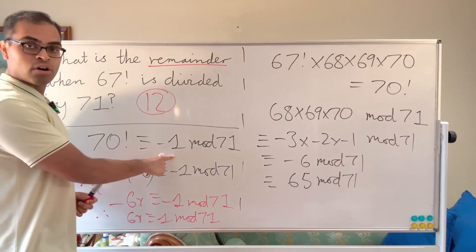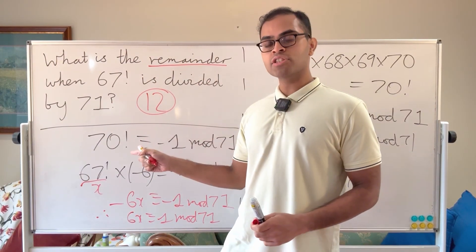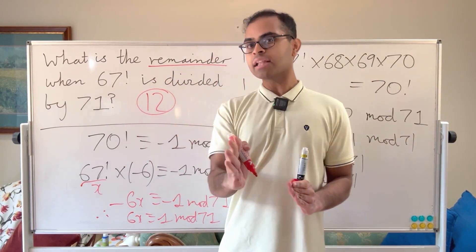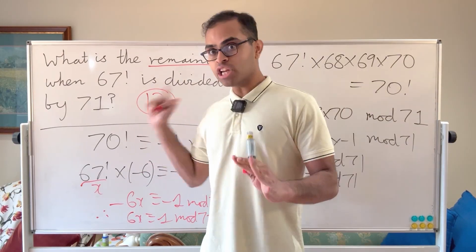But why is it true that 70 factorial is congruent to minus 1 mod 71? Check out this video. It's going to pop up on your screen. It's Wilson's theorem, a very beautiful theorem in number theory. And this problem is exactly the motivation you need to master the intuition behind that proof. You're going to love that video.